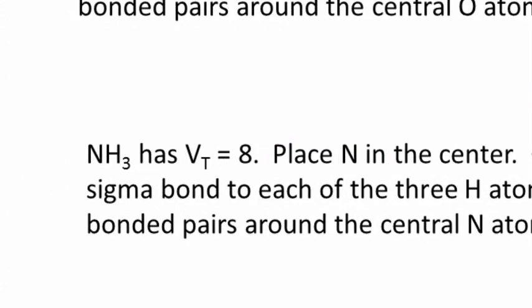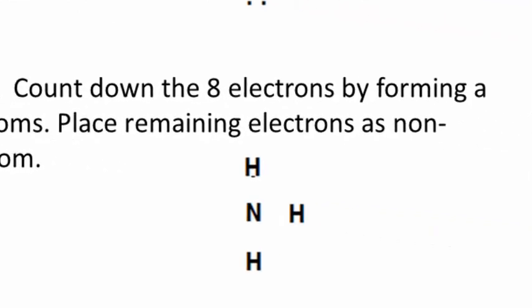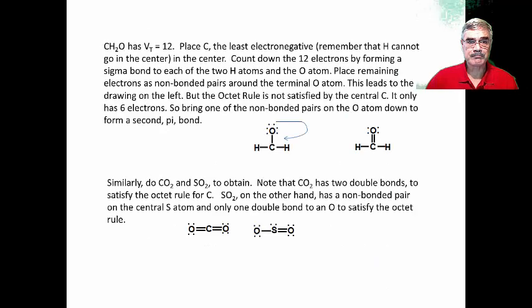NH3, ammonia. Nitrogen will go in the middle — again, hydrogens can never be central. Adding up VT, we again get eight total valence electrons. We place nitrogen in the center and count down the eight electrons, forming sigma bonds between the central nitrogen and each hydrogen. But then we have two electrons left over. We can't place them around hydrogen, so we put the extra pair around the central nitrogen. This is the Lewis dot structure for ammonia. Let's now do a couple that are a little more challenging.